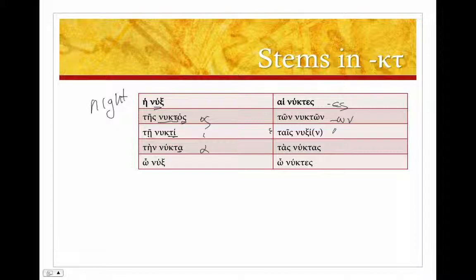So actually it's going to act very much like stems that end in just kappa, as the kappa tau sigma, add those together and we're going to get a xi. And then tas nuktas, back to normal, and o nuktes.